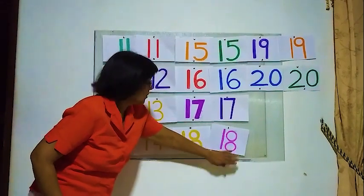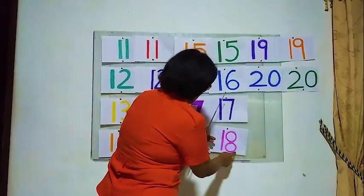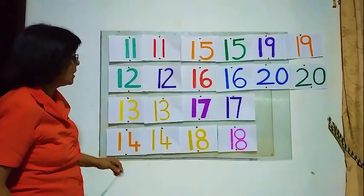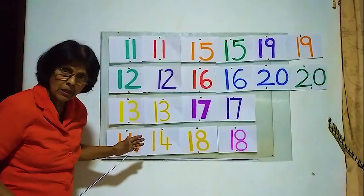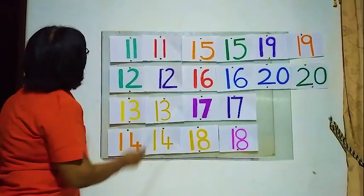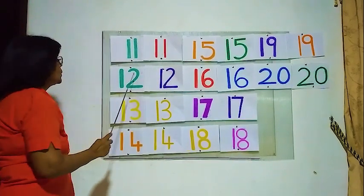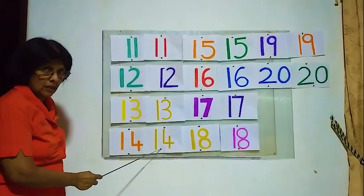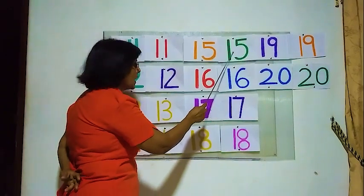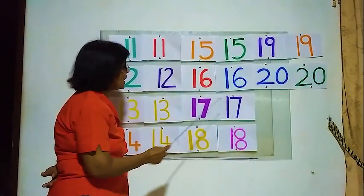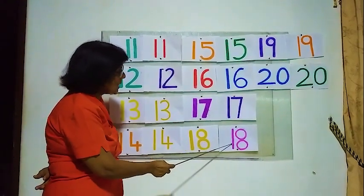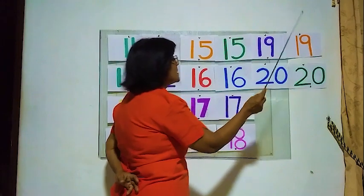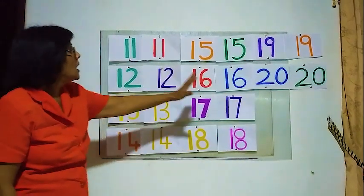Now we'll start from the beginning. We'll read from the beginning and check whether the numbers are okay — same number, we have fixed it. Now we are correcting whether this is correct or not. Eleven, eleven — correct. Twelve and twelve — correct. Thirteen and thirteen — correct. Fourteen and fourteen — correct. Fifteen and fifteen — correct. Sixteen and sixteen — correct. Nineteen and nineteen — correct. Twenty and twenty — all the numbers are correct.